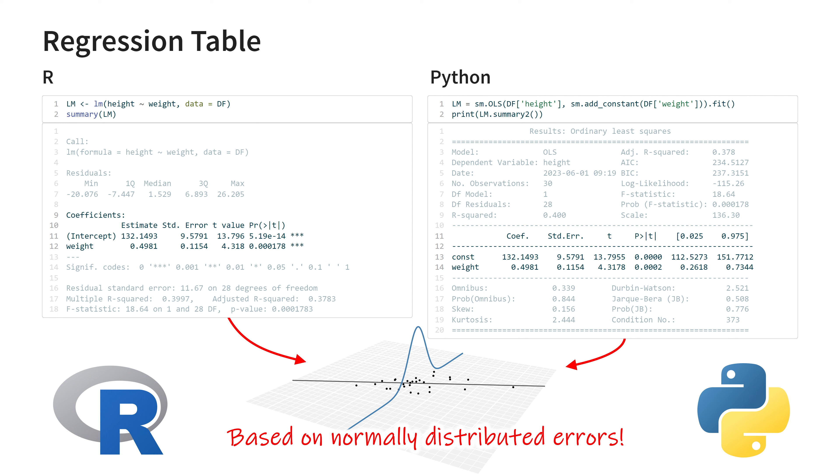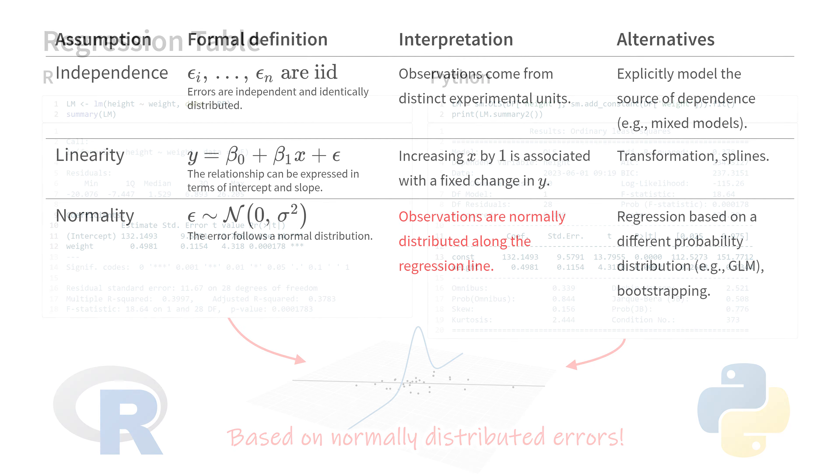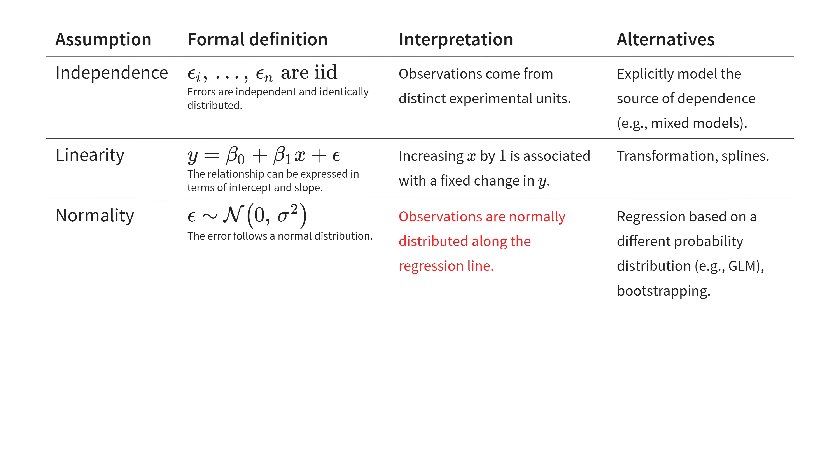If you can't assume normality, you can't trust any measures calculated based on normality. For processes that are fundamentally non-normal, like counts, binary data, and ratios, we can resort to other methods, like generalized linear models.